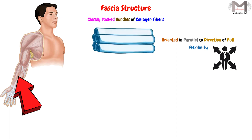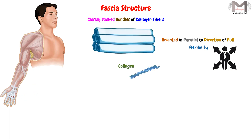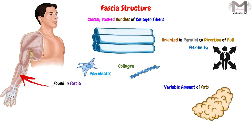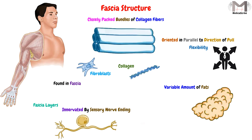As we said, the fascia is composed of collagen bundles, which means it contains collagen. This collagen is produced by the fibroblasts found in the fascia. It may also contain a variable amount of fats, and the fascia layers are frequently innervated by sensory nerve endings, so the fascia will be sensitive.